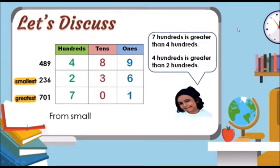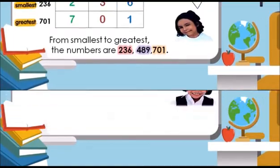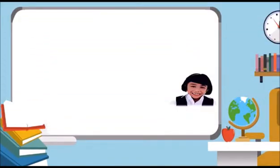From smallest to greatest, the numbers are 236, 489, 701. Let us look at the next example.